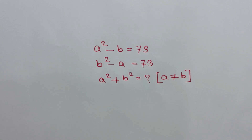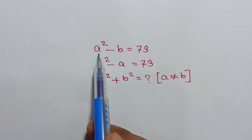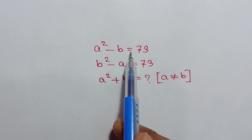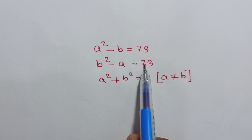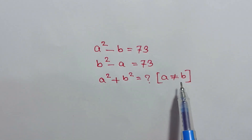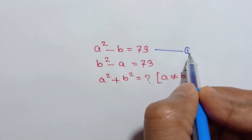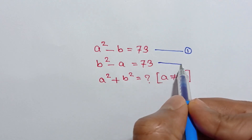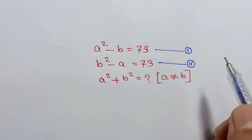Hi everyone. In this video I am going to show how to find the value of a² + b², where a² - b = 73 and b² - a = 73, and a is not equal to b. Let's call these equation number one and equation number two.